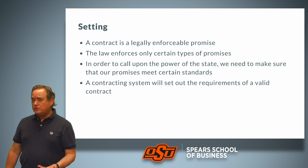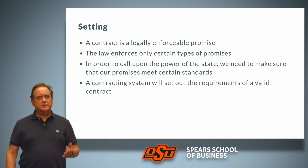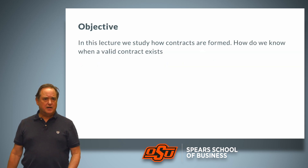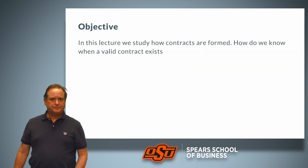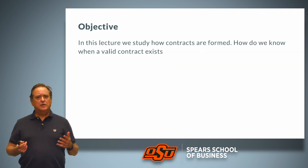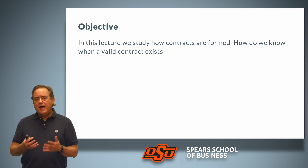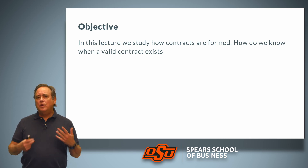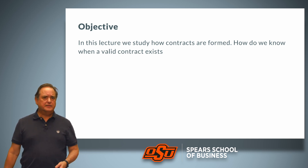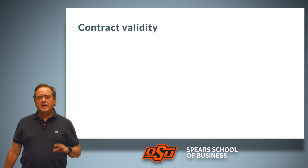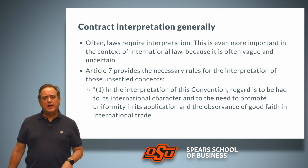It is the contracting system that sets out the requirements of a valid contract. In this lecture, we're going to study how contracts are formed and how we know when a valid contract exists, starting with the topic of contract validity.